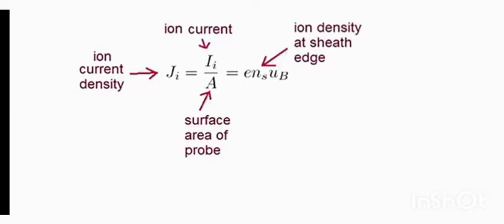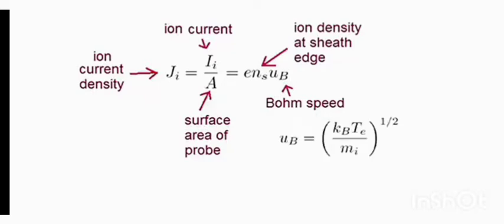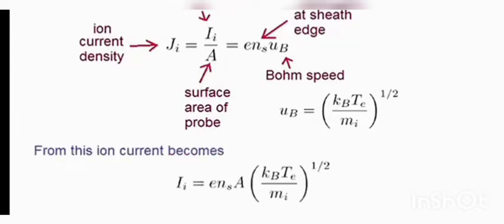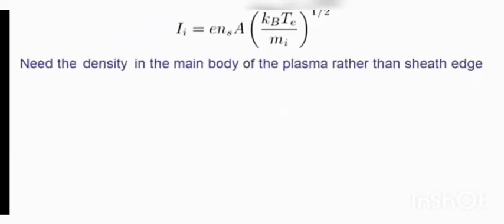Now we can write the current density in the expression as we have seen before, where ns is the ion density at the sheath edge and uB is the Bohm speed, which we have seen before with this expression. If we now substitute the expression for the Bohm speed, we can write the ion current as follows.